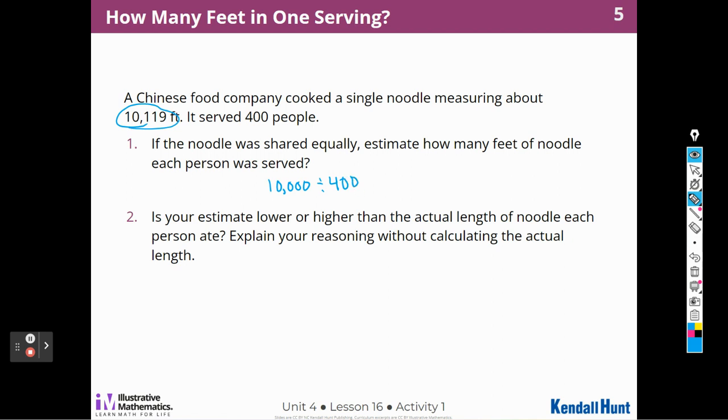Well, I know that what times four would get me close to 10,000? 400 times two would be 800, right? We need 10,000. I need way more than that. So let's do 400 times 20. That would get me 80,000, right? Well, I need more than that. So let's do 400 times 25.